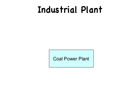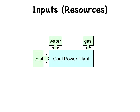Now let's look at an industrial plant — in this case a coal power plant. Every industrial plant has inputs, or what we sometimes call resources or raw materials. In the case of a coal power plant, there is coal, water, and gas.